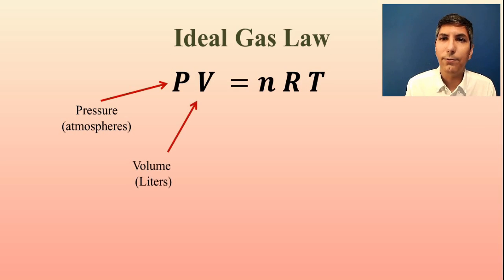Now V represents the volume of the gas, and that's going to need to be in liters. Once again, if for some reason you're given a volume that's not in liters, if it's in milliliters or gallons or cubic meters, you're going to have to convert it to liters in order to use it in the Ideal Gas Law.